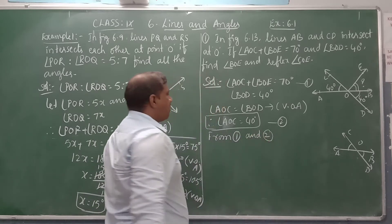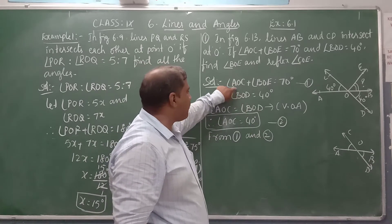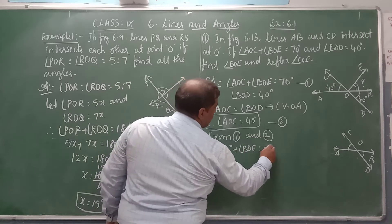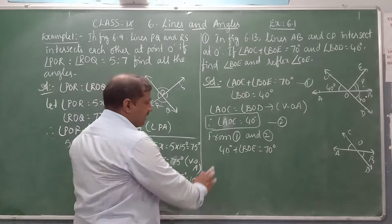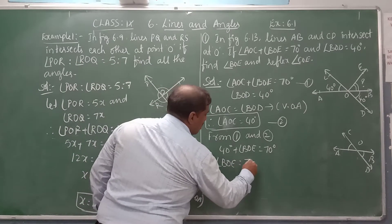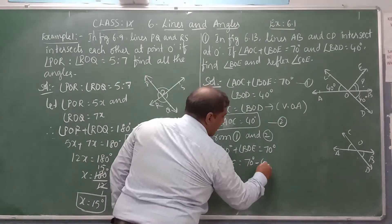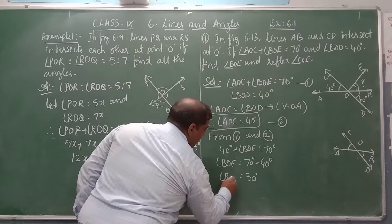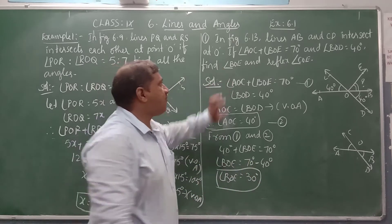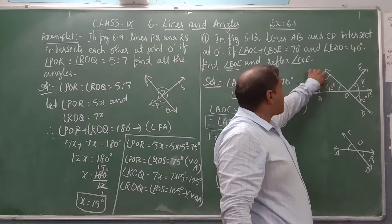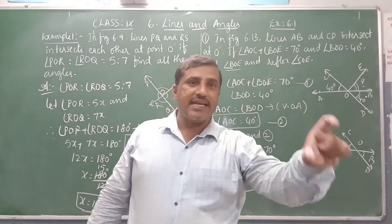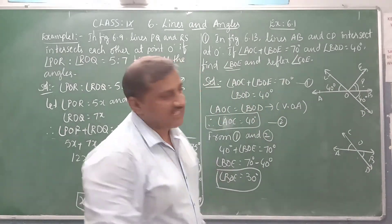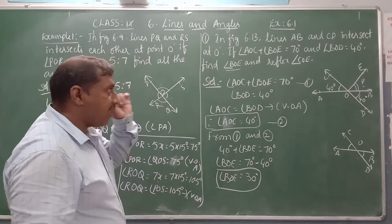We found angle BOE is 30 degrees. Next, we have to find the reflex of angle COE. To find that, first find angle COE, then subtract from the complete angle of 360 degrees to get the reflex angle. From the figure, this is a straight line on which we have three angles.